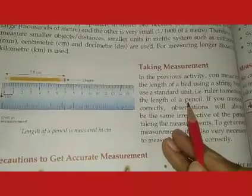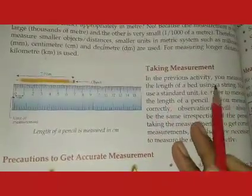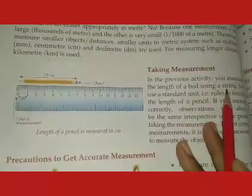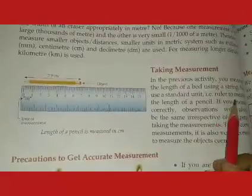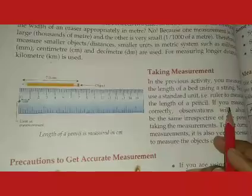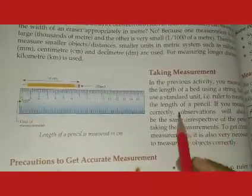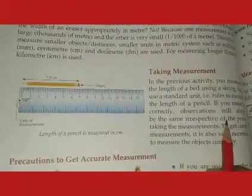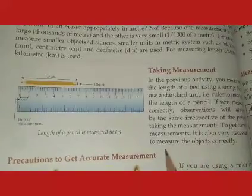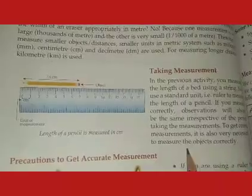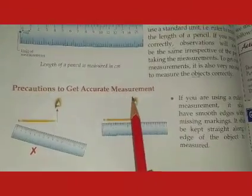Next topic is taking measurement. In the previous activity, you measured the length of a bed using a string. Now use a standard unit — a ruler — to measure the length of a pencil. If you measure correctly, the observation will always be the same regardless of the person taking the measurement. It is important that we correctly take the measurement of any object using a scale.